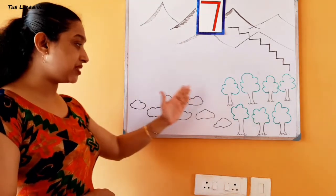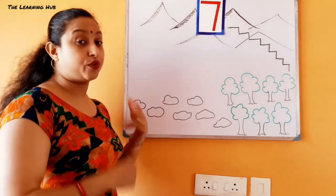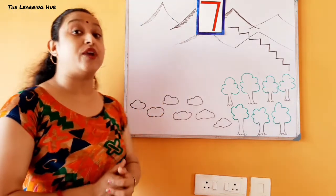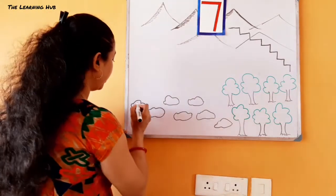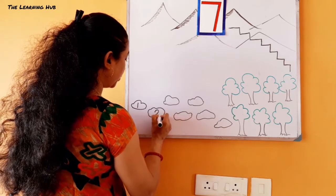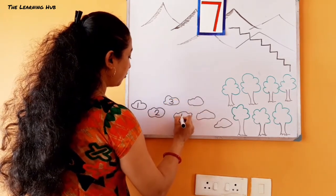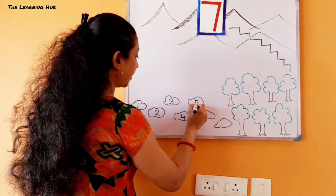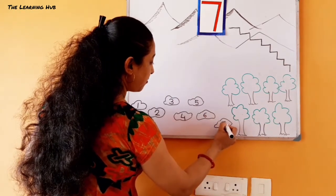Children, can you see some stones are there? Yes! So will you please count the number of stones that we have to skip on? Let's start: one, two, three, four, five, six, seven!